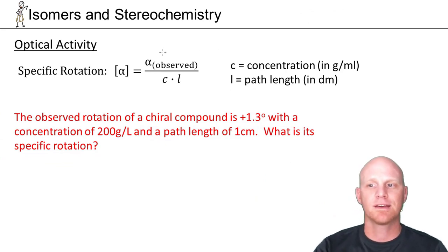It turns out if you take a compound and stick it in a polarimeter, you're going to get an observed rotation. Here alpha stands for rotation.